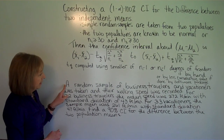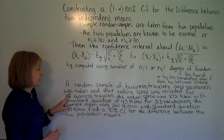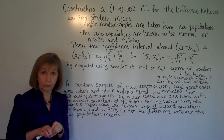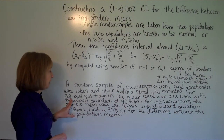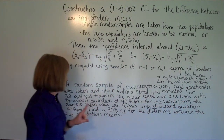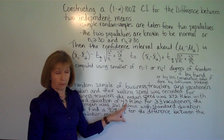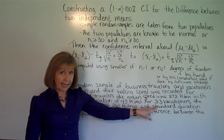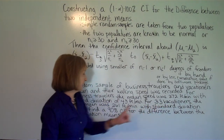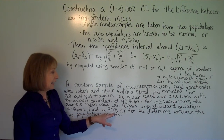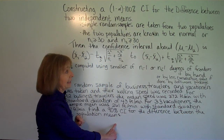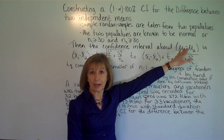Here's an example: a random sample of business travelers and vacationers was taken and their walking speed was recorded. For 32 business travelers, the mean speed was 272 feet per minute with a standard deviation of 43 feet per minute. For 33 vacationers, the sample mean was 261 feet per minute with a standard deviation of 47 feet per minute. Find a 90% confidence interval for the difference between the two population means.